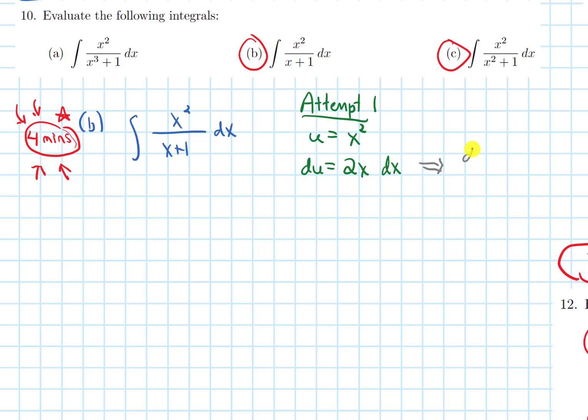So if I rearrange this, I get du over 2x equals dx. And if I start to sub in, we will get the integral. The numerator is u. The bottom is still x plus 1. And the dx becomes du over 2x. And we don't get a nice cancellation here. And the reason for that is my du was 2x dx. And I don't see that in my integral, even off by a constant multiple. I do see an x in my integral. It's just in the denominator, unlike in du, where this 2x is in the numerator. So I don't exactly see du in my integral, even off by a constant multiple.